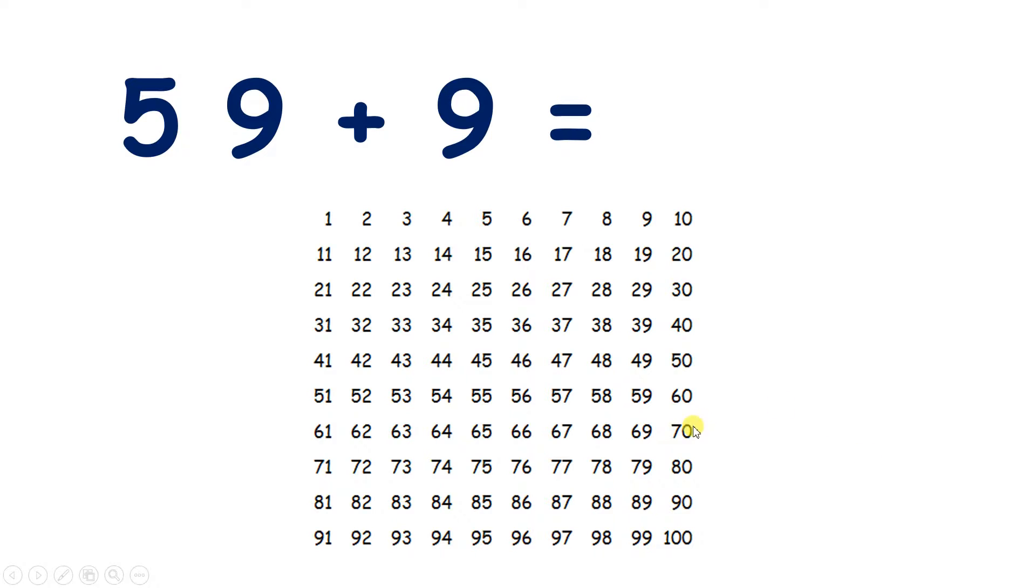So let's do the same thing. We find 59, and now, rather than counting on 9, because we know that 9 is 10 take away 1, we can add 10, then take away 1, and that gives us our answer, 68.